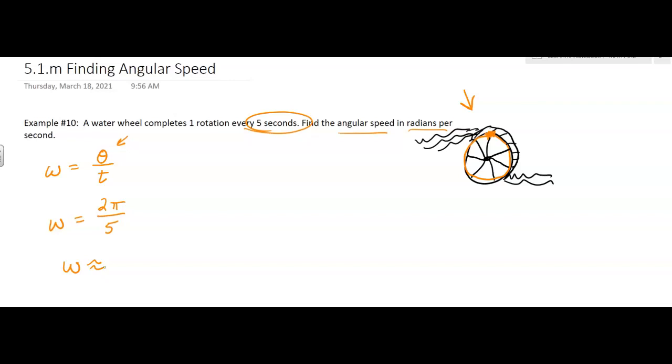2π divided by 5. So it's about 1.257, rounding up.